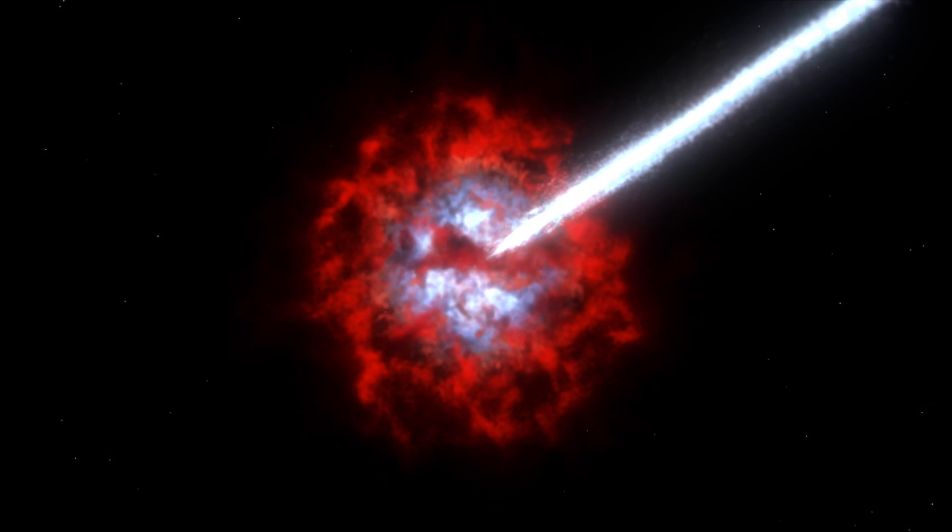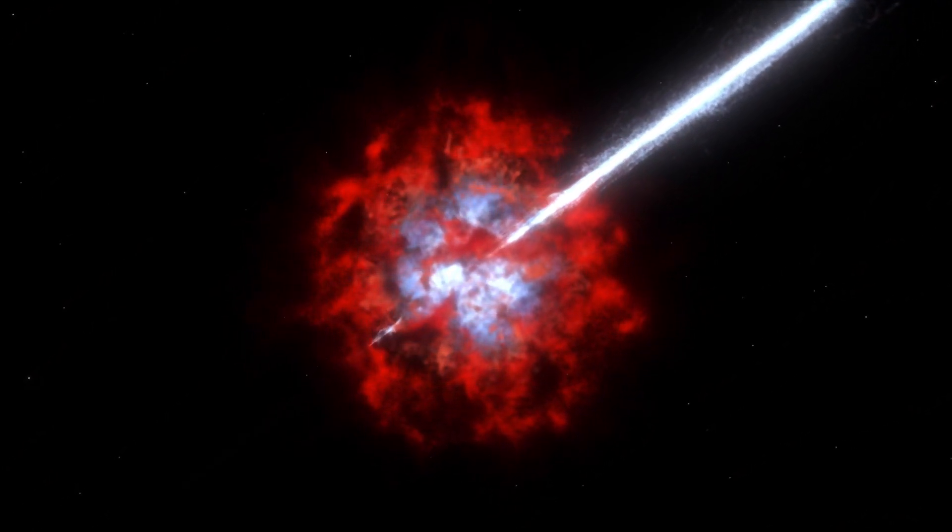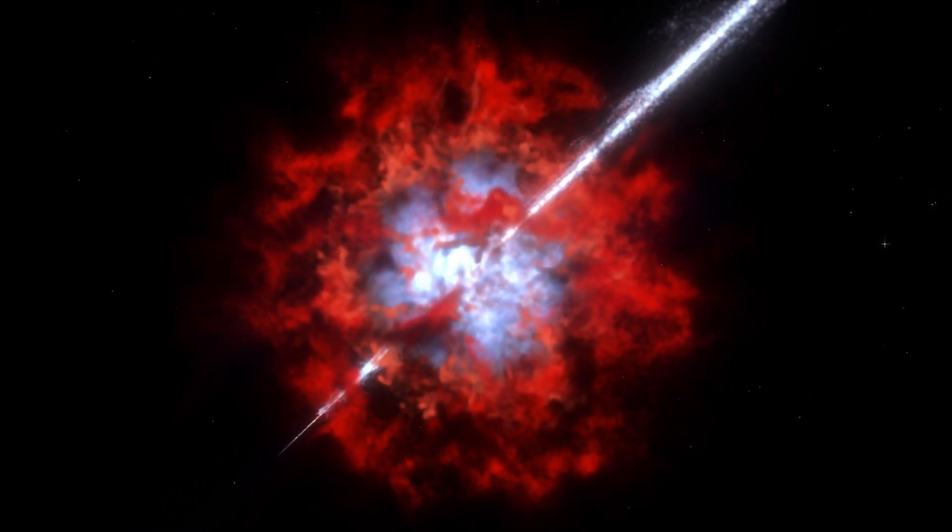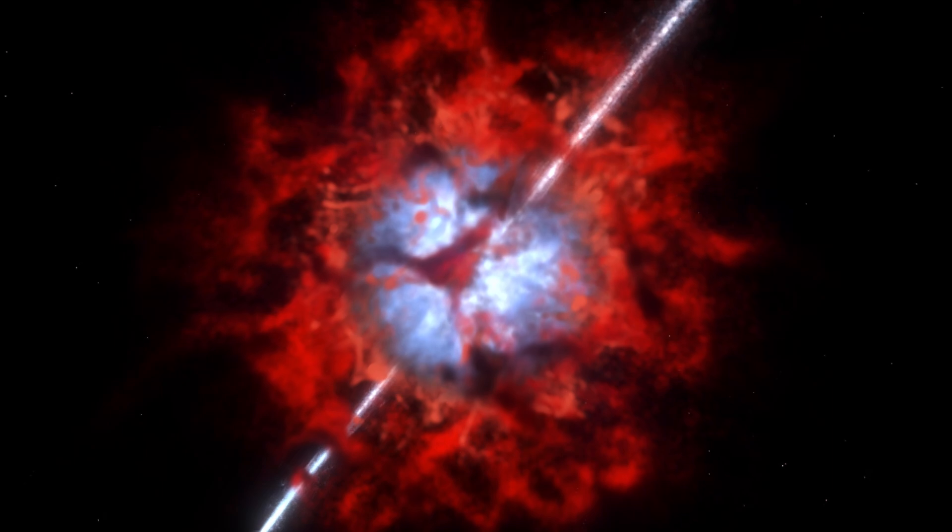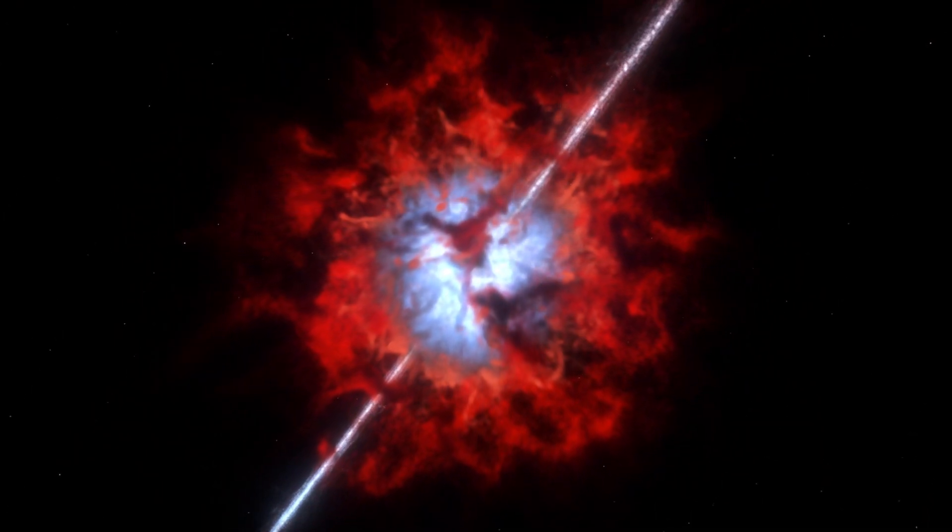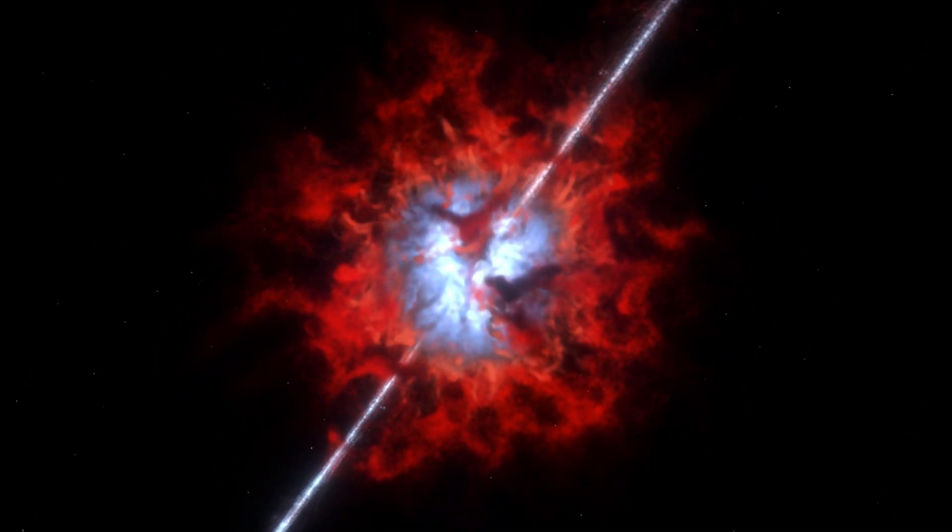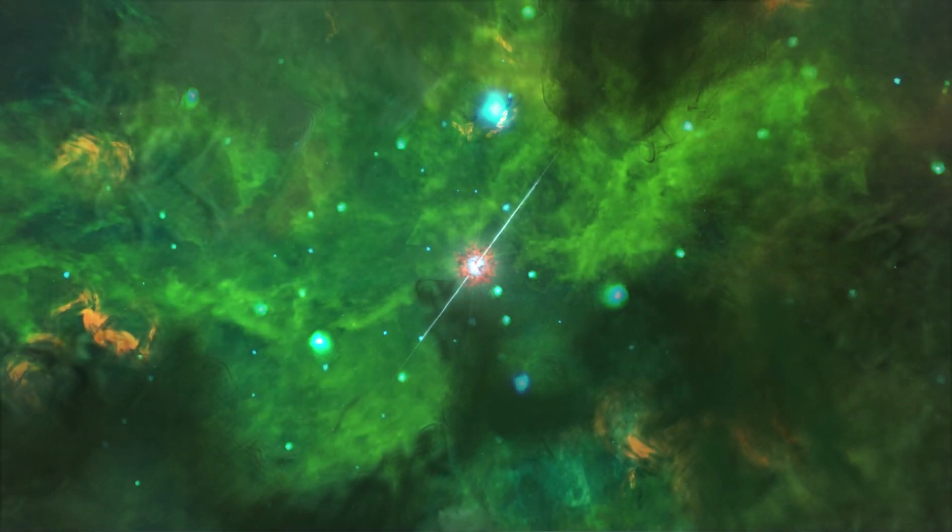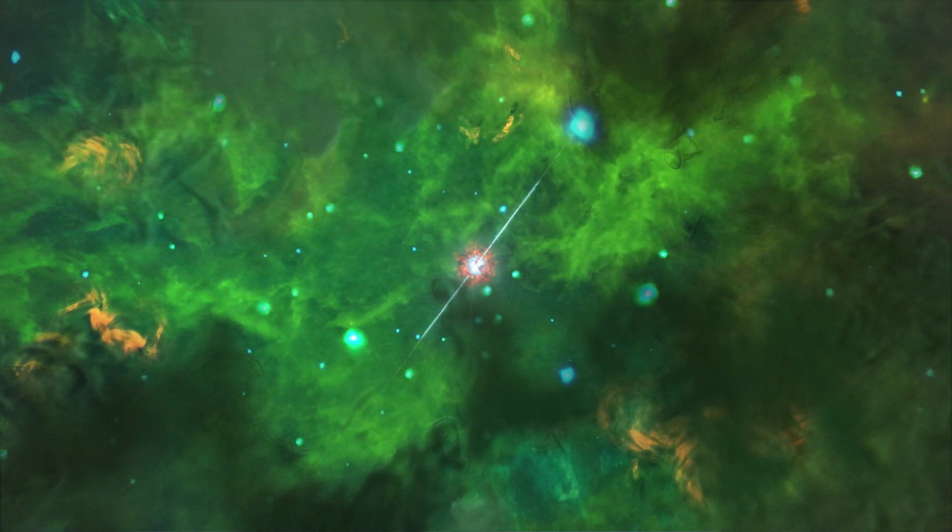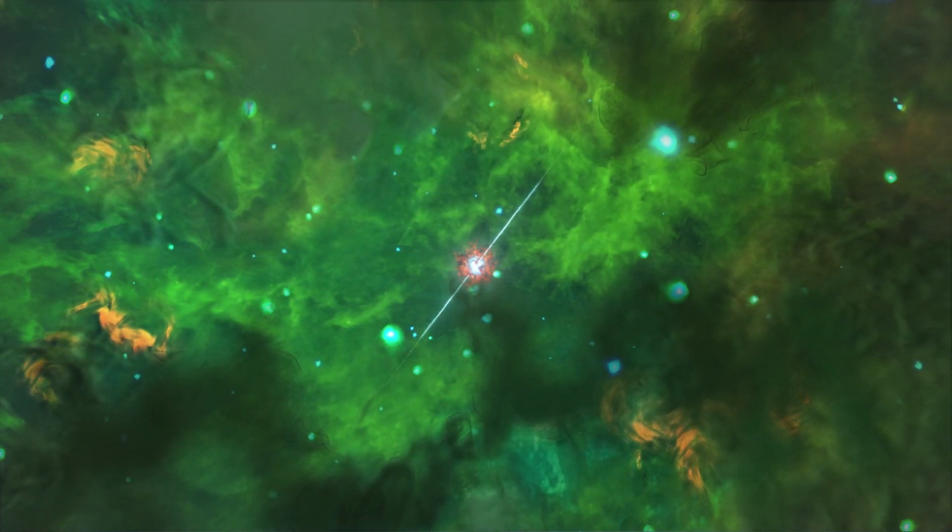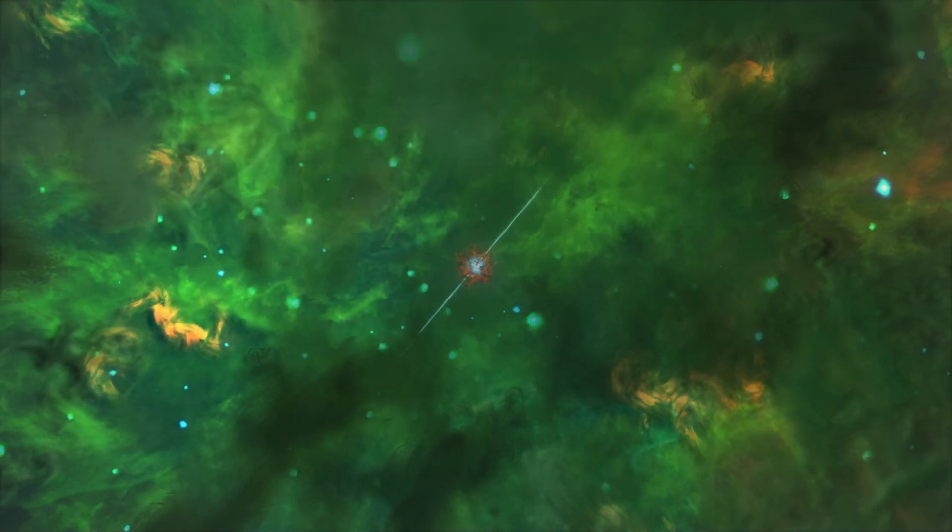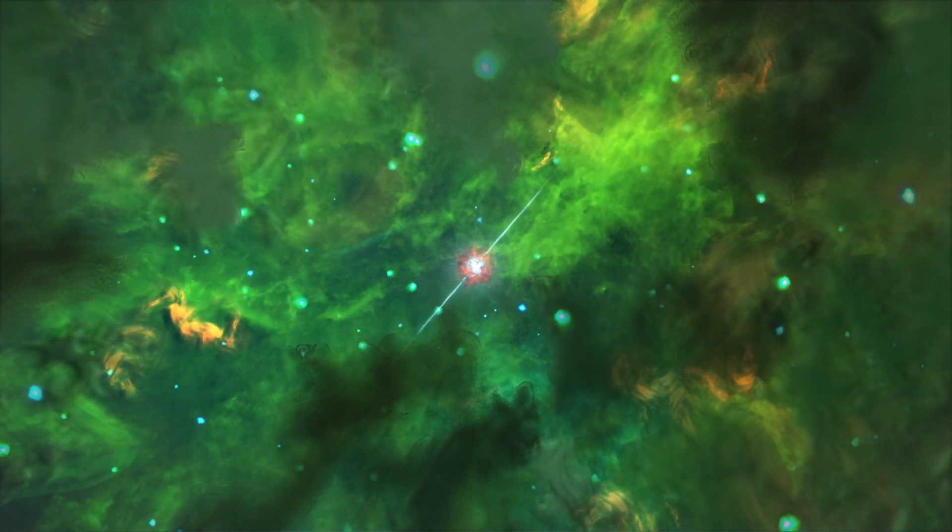However, in this instance, the jets appeared markedly distinct. Unlike the typical dispersion observed in most GRBs, these jets seemed contracted and exceptionally narrow. This narrowness likely contributed to the formation of an intensely brilliant jet, visible billions of light years away and enduring for an unprecedented duration. Now, obviously, right now, nobody has any idea why these jets were so much more narrow than usual and why they seemed to be so much more powerful, lasted so much longer and produced so much more energy than a normal GRB.